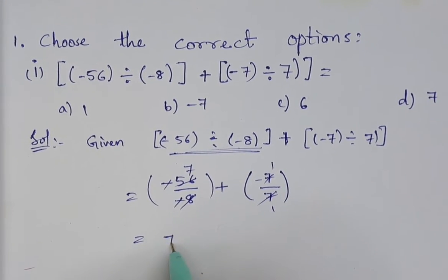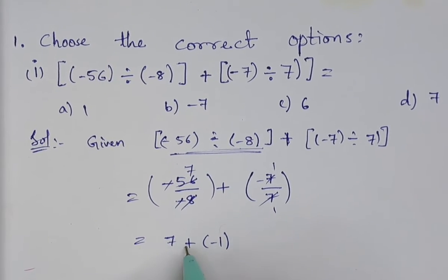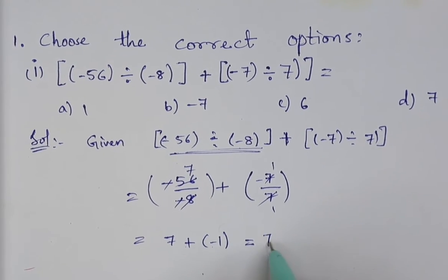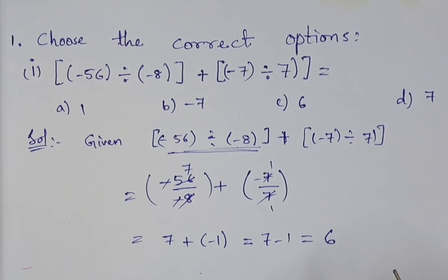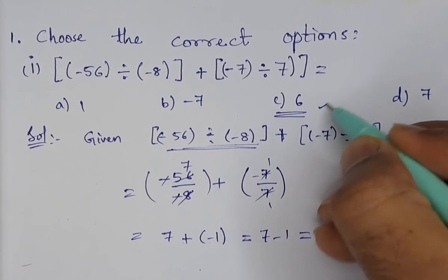We are getting 7 + (-1). Plus times minus is minus, so 7 - 1 = 6. Therefore, the correct option is c) 6.